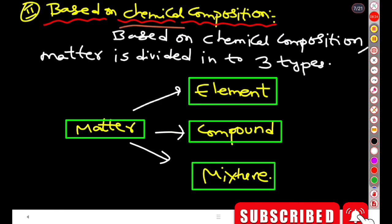Now, by means of chemical composition, matter is classified into three types: element, compound, and mixture.